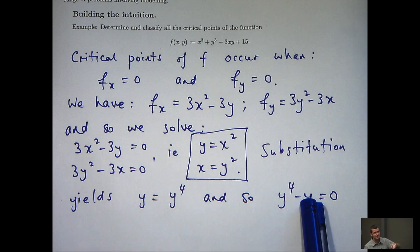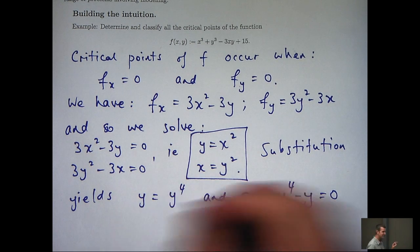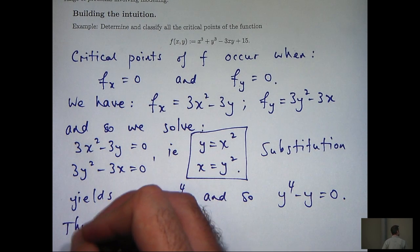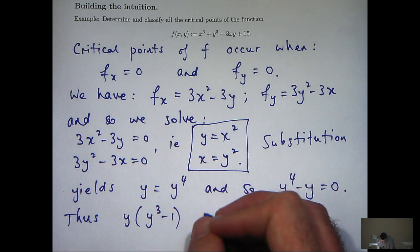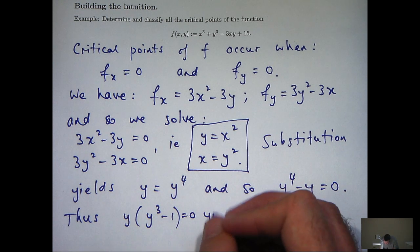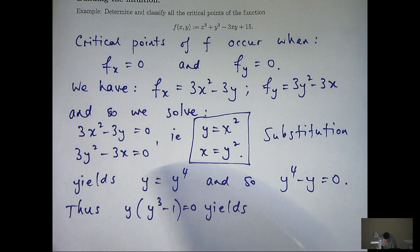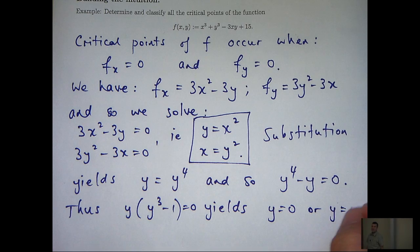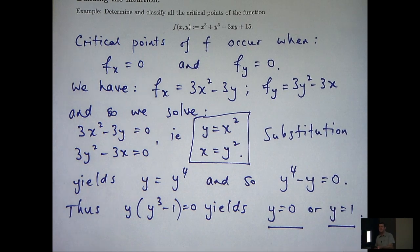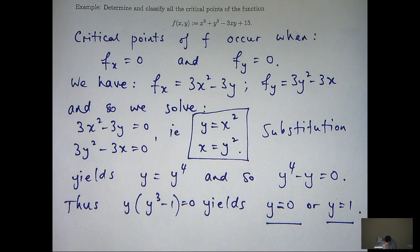And so what I can do is rearrange this and form the following. So I'm going to take out a common factor of y. So either y is zero or y cubed minus one is zero. In both those cases I'll get the following. So I get two values, possible values for y.